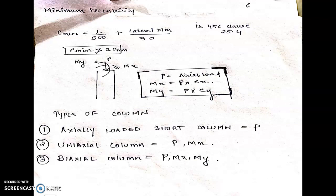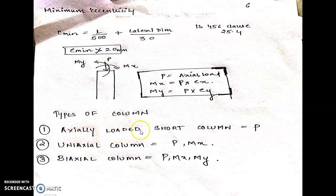The minimum eccentricity shall be calculated by the formula given in IS 456 clause 25.4. Columns can be of three types: axially loaded short columns subjected only to axial force; uniaxial columns subjected to axial force and moment from one direction; and biaxial columns having axial force and moment from both directions.